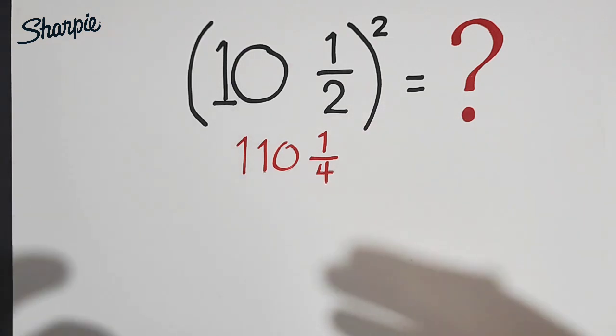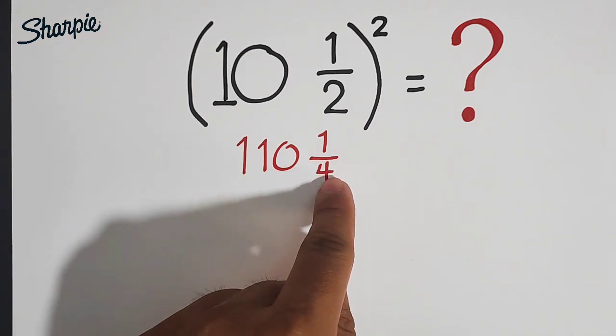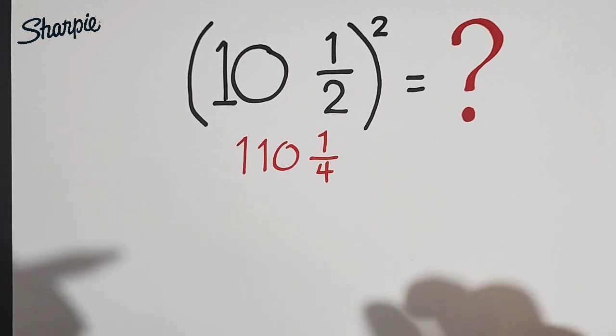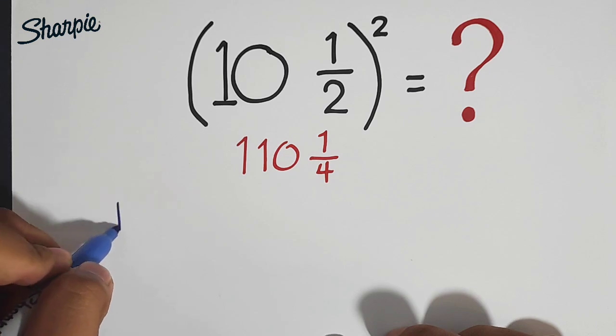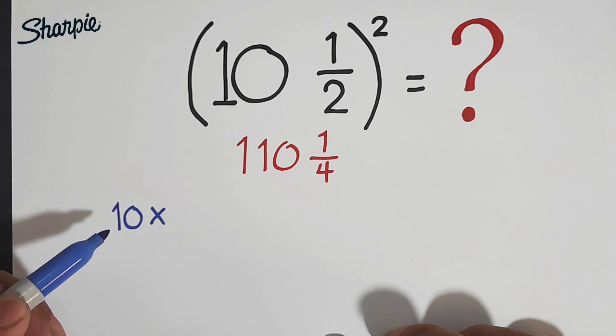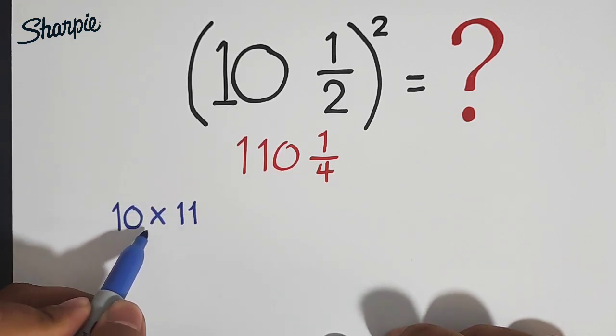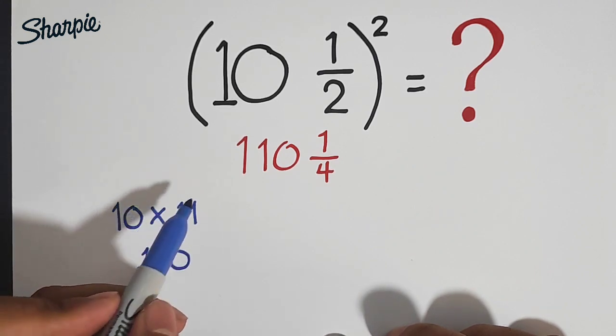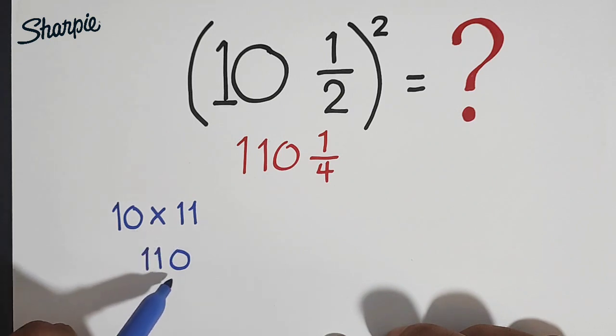So what is the method or what is the trick here for us to get 110 and 1 fourth? So here's the trick guys. First, you need to copy the number. We have 10 and then you need to multiply 10 by the next number, which is 11. We know that 10 times 11 is 110. And next, aside from that, aside from multiplying this number 10 by the next number, which is 11, that is equal to 110.